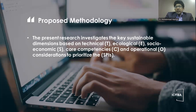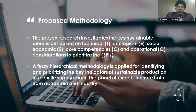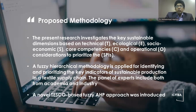The proposed research investigates the key sustainable dimensions based on technical, social, economic, core competencies, and operational considerations to prioritize the sustainable production indicators. A quasi-hierarchical methodology is applied for identifying and prioritizing the key indicators of sustainable production in a textile supply chain. The panel of experts includes both academia and industry. A novel TESCO-based FASI-EHP approach was introduced. TESCO stands for Technical, Ecological, Socio-economic, Core competencies, and Operational factors of manufacturing industries.